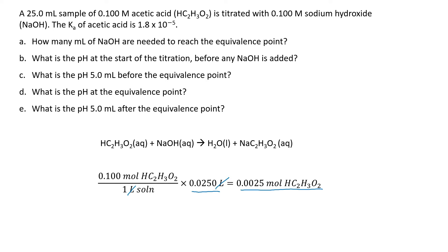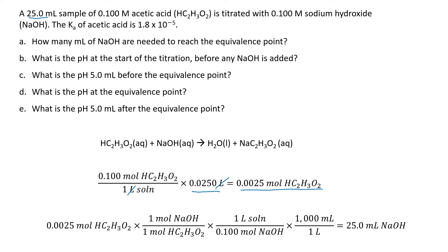That volume comes from converting 25 milliliters by moving the decimal. At the equivalence point, your moles of acid will equal your moles of base. Taking my moles of acid, I convert to moles of base — again, a one-to-one ratio. Once I know my moles of sodium hydroxide, I use my concentration to find liters of solution and convert to milliliters. My equivalence point happens at 25 milliliters of sodium hydroxide. That one-to-one ratio really works in our favor for easier calculations.